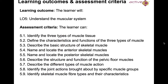The learning outcomes: you should be able to identify three types of muscle tissues, define the characteristics and functions of the three types of muscle, describe the basic structure of skeletal muscle, name and locate anterior and posterior muscles, describe the structure and function of the pelvic floor muscles, describe the different types of muscle actions, identify the joint actions brought about by specific muscle groups, and identify skeletal muscle fibre types and characteristics.